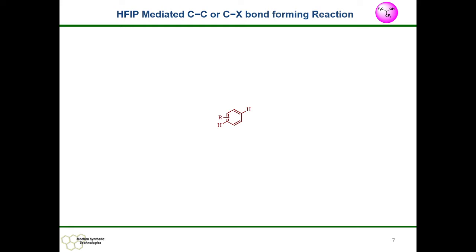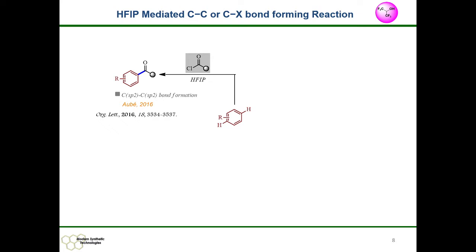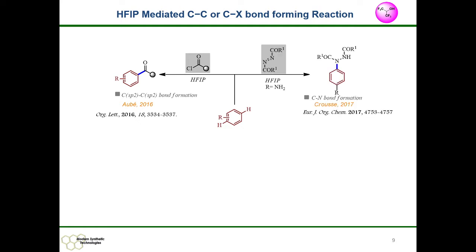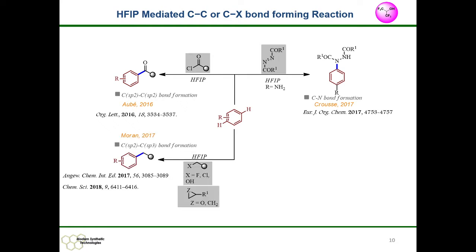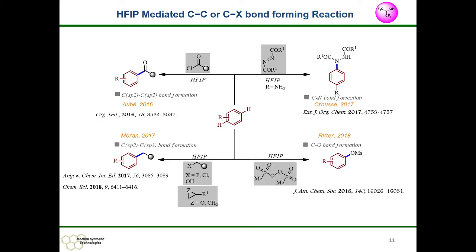Some HFIP-mediated C-C or C-heteroatom bond forming reactions will be discussed. The first is from the Aubrey group in 2016, who obtained Friedel-Crafts acylation using acyl chloride in the presence of HFIP. The second is direct aromatic C-N bond formation by Crusoe et al., using HFIP as solvent. In 2017, Moran et al. activated epoxide, cyclopropane, and benzyl halide with HFIP for C-C bond formation. In 2018, Tobias Ritter's group activated peroxide with HFIP for C-O bond formation.